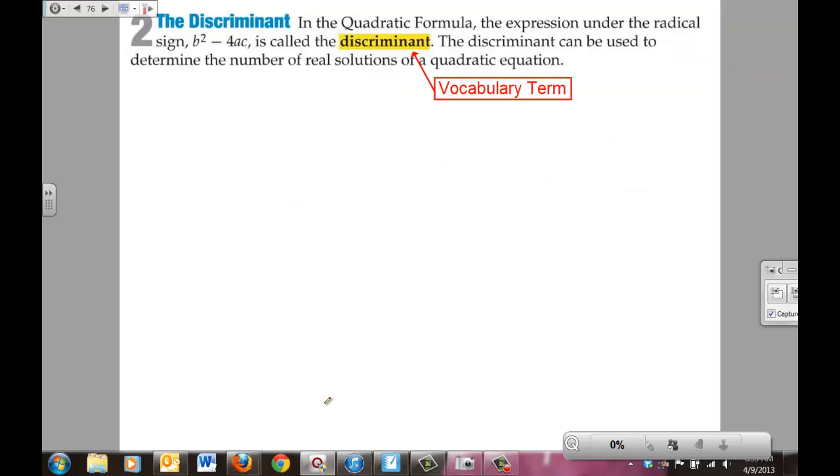The discriminant: In a quadratic formula, the expression under the radical sign of b² - 4ac is called the discriminant. The discriminant can be used to determine the number of real solutions of a quadratic equation. Once again, that's a vocab term. Know it for your quiz.